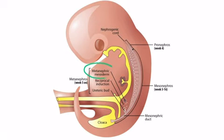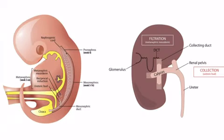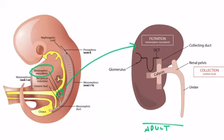The metanephric mesoderm will form the filtration system — all the structures between the glomerulus and the distal convoluted tubule of the nephron. So the metanephric mesoderm becomes the filtration system, and the ureteric bud becomes the collecting system. To help visualize this, we've shown the adult structure on the right. The brown metanephric mesoderm becomes the kidney, specifically the filtration system, including everything from the glomerulus to the distal convoluted tubule.